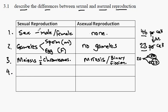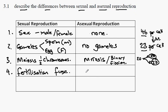In sexually reproducing populations, we find the process of fertilization, in which gamete cells — the sperm cell from a male and the egg cell from a female — fuse together. In asexual reproduction, there are no gametes, there is no cell fusion, and there is no fertilization.